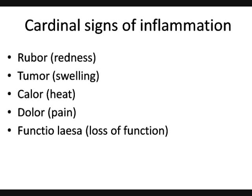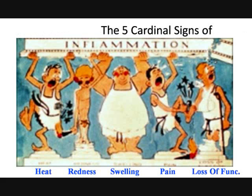This picture here demonstrates ruber and tumor. You can see ruber because of the red inflammation, and tumor because of the enlargement of the affected region due to the activity of the histamines and leukocytes. And clearly, due to this redness, it's going to be hot — that's why it's called calor.